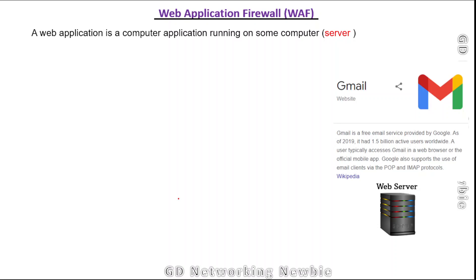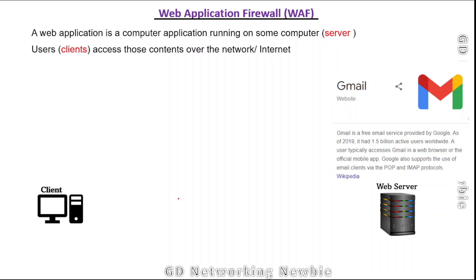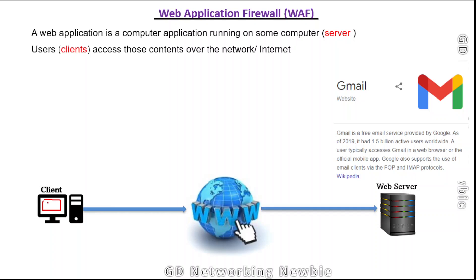Let's say Gmail is a web application, and to access Gmail we use our computers. That computer can be a laptop, smartphone, or tablet — we call that a client machine. On that client machine we open a web browser, and using that web browser and an internet connection, we can access web applications hosted anywhere in the world.